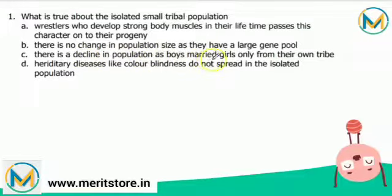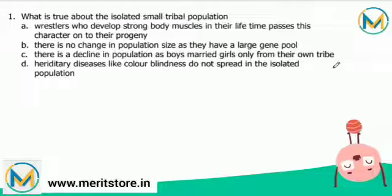Option C: there is decline in population as boys marry girls only from their own tribe. The small tribal population will have a small gene pool. Hereditary diseases like color blindness will spread in isolated populations due to inbreeding. This is due to the absence of gene migration or gene flow. Thus the correct option is option C.